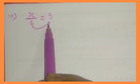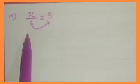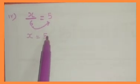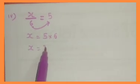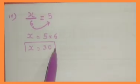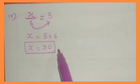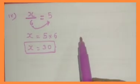So x is equal to 5 multiplied by 6. x is equal to 30. This is the solution of the given equation. Now we have to verify the correctness of the solution.